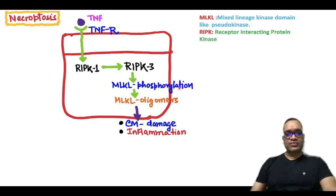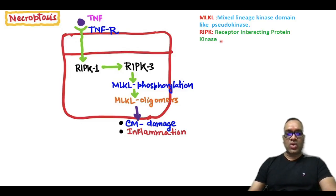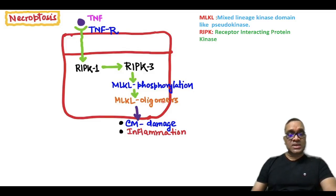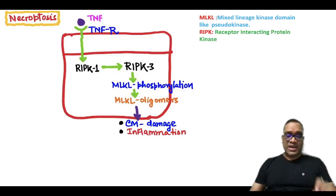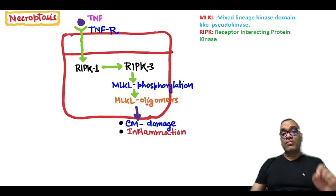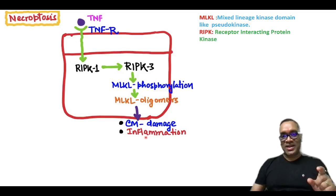RIPK3 helps in MLKL phosphorylation — MLKL stands for mixed lineage kinase domain-like pseudokinase. This phosphorylation of MLKL forms MLKL oligomers, which deposit into the cell membrane, causing membrane damage and inflammation. Therefore, necroptosis is a variant of necrosis due to cell membrane damage and inflammation. Enjoy learning, best wishes.